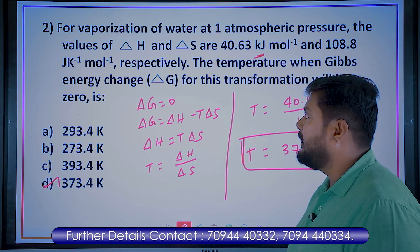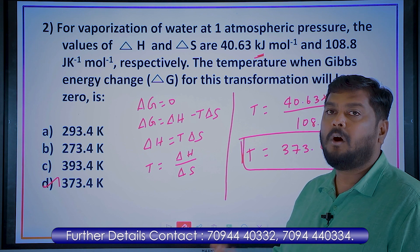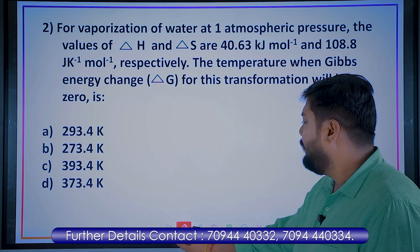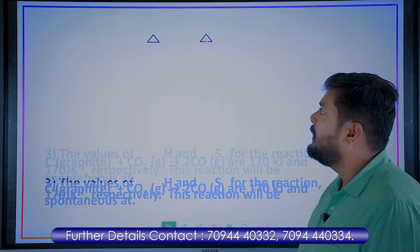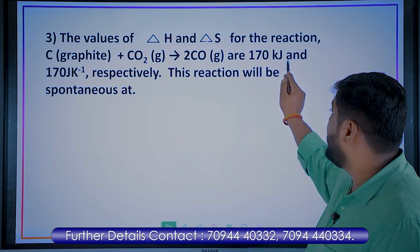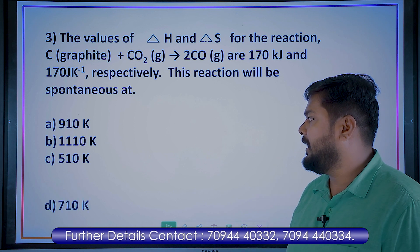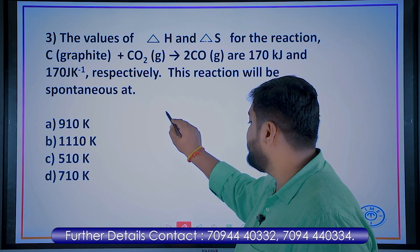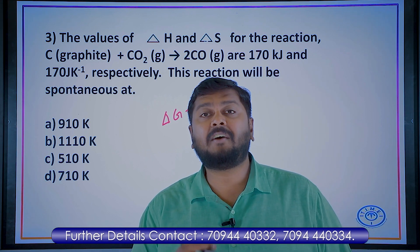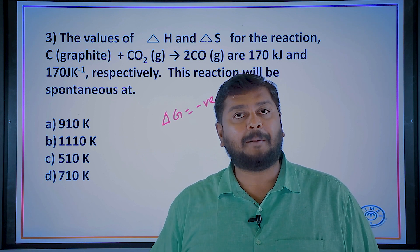The answer is 373.4 Kelvin. For your practice, I have given one question: for a given equation, ΔH is 170 kilojoules and ΔS is 170 joules per Kelvin. Find the temperature at which the reaction becomes spontaneous — that is, the temperature at which ΔG is negative. Predict your answer and give your answers in the comment section.